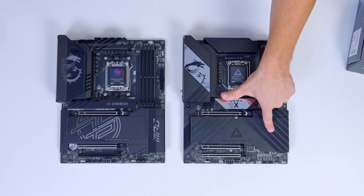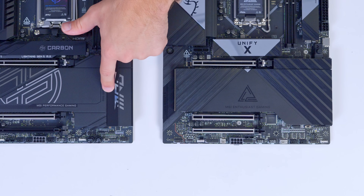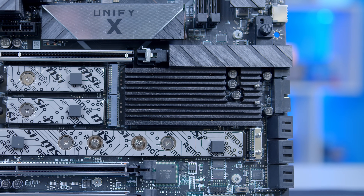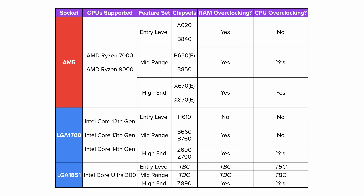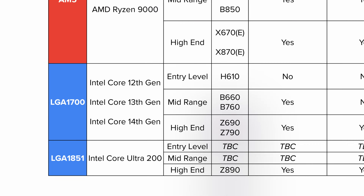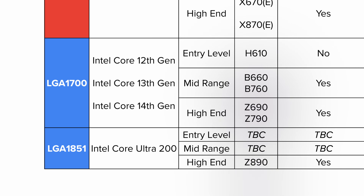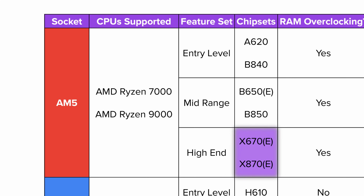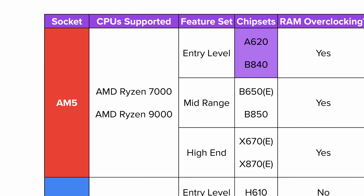The chipset is a small component on AMD and Intel boards that determines the kind of features available on the motherboard. Intel's high-end chipset is their Z lineup, moving down to the B series in the middle, and the H series at the very low end. AMD have the X series chipsets at the top, B series in the middle, and A series towards the bottom.